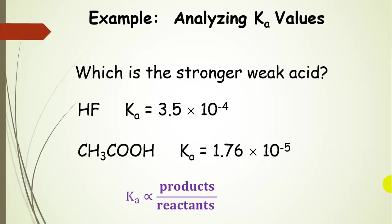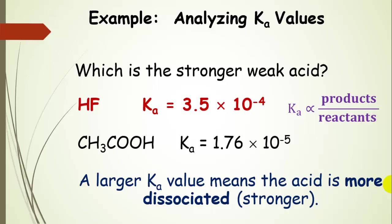Let's look at hydrofluoric acid and acetic acid — which of the two is the stronger weak acid? Hydrofluoric acid has a larger Ka value: 10 to the negative 4 instead of 10 to the negative 5. That means a larger percent has dissociated for hydrofluoric acid than for acetic acid, making hydrofluoric acid a stronger weak acid. It's still a weak acid, not a strong acid, but it's stronger than acetic acid.